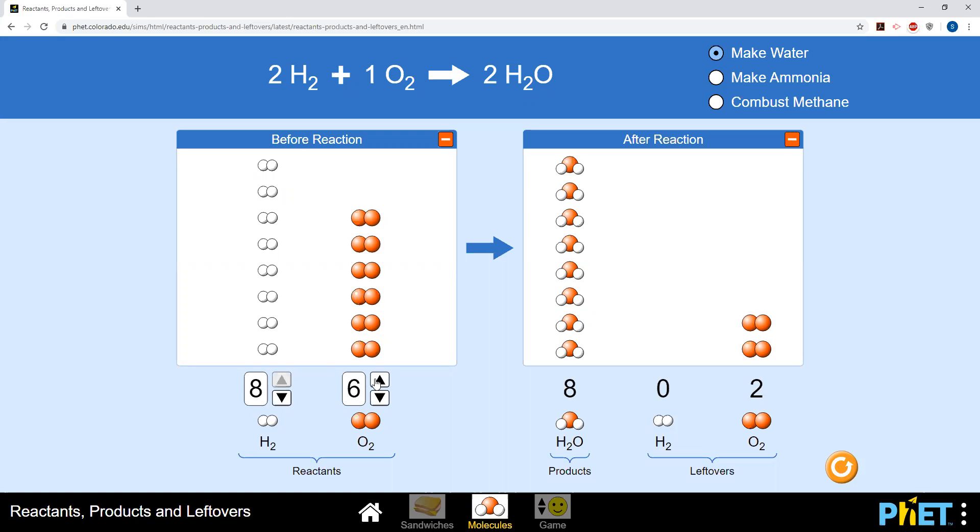The result is that the theoretical yield is eight moles of H2O and as you can see here, H2 is the limiting reagent because all of it was consumed, whereas O2 is the excess reagent because two moles remains.